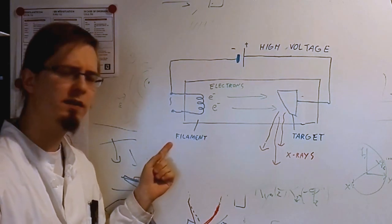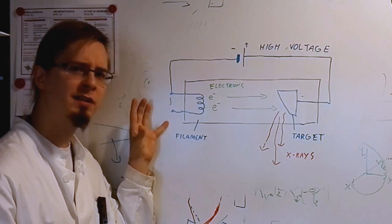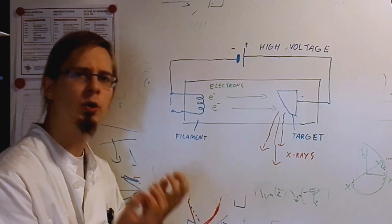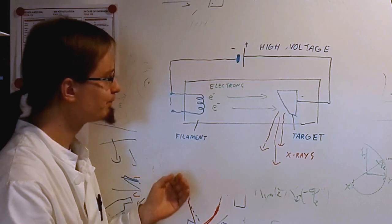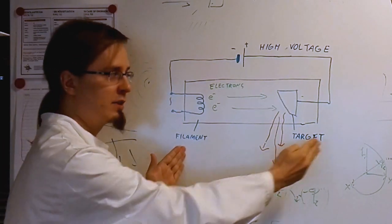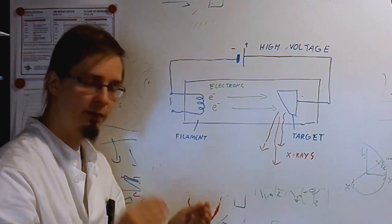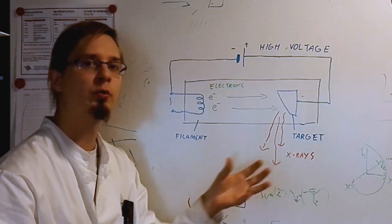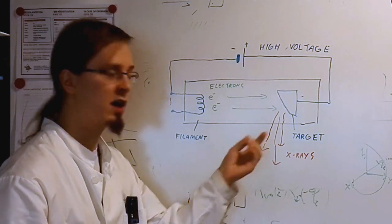So the filament is basically a light bulb. The filament is heated up with a low voltage current, and that heating causes the electrons to be released in the vacuum of the tube. The high voltage connected between the filament and the target accelerates the electrons to very high velocities, and when they hit the target, they produce x-rays when they decelerate and excite the atoms of the target material.